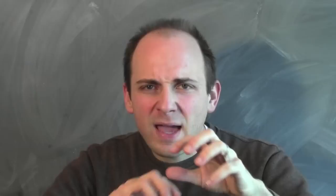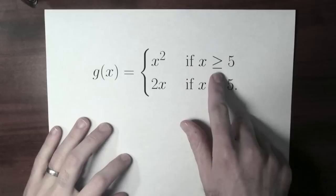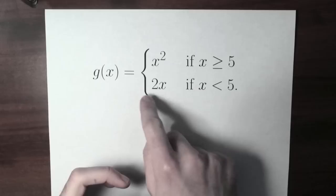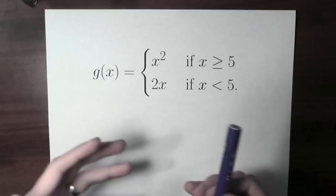We've seen a function defined in terms of algebra — f of x equal x squared plus x — and a function defined entirely with English words. We can combine those two things, using English to pick out different kinds of algebra. Here's another function: g of x is x squared if x is greater than or equal to 5, and twice x if x is less than 5. The point is that I'm using the word 'if' to select, based on how big x is, a different algebraic rule for calculating the function. This is called piecewise notation.